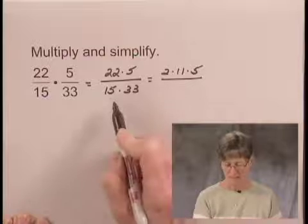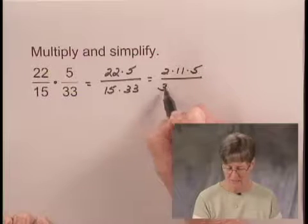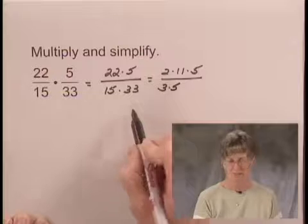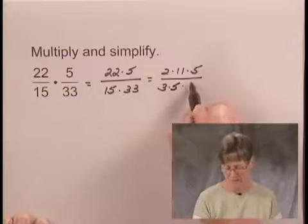In the denominator, I can factor 15 as 3 times 5, and I can factor 33 as 3 times 11.